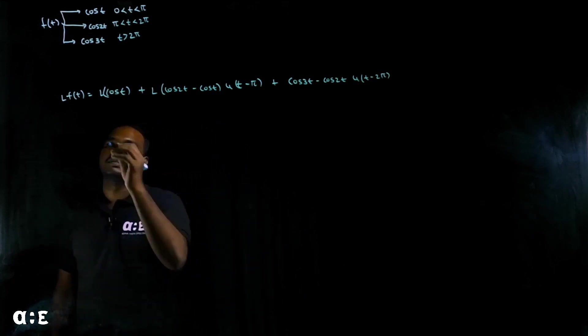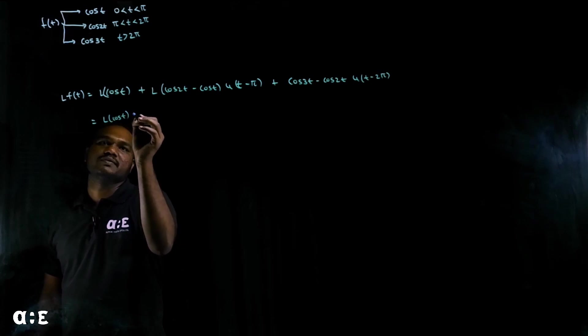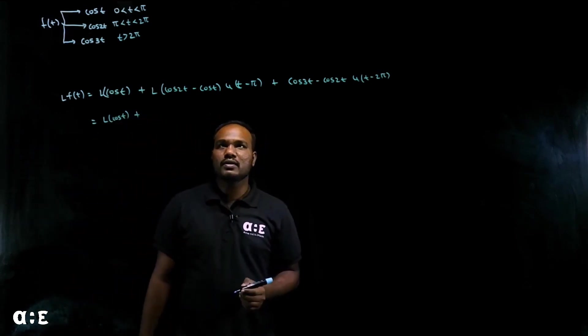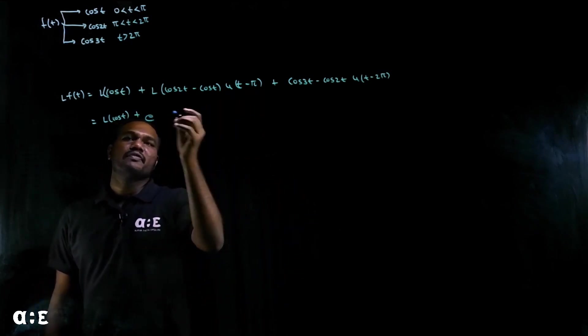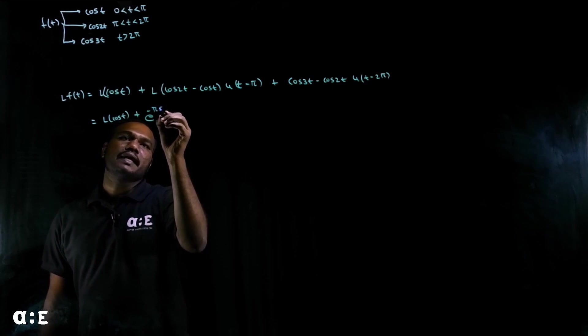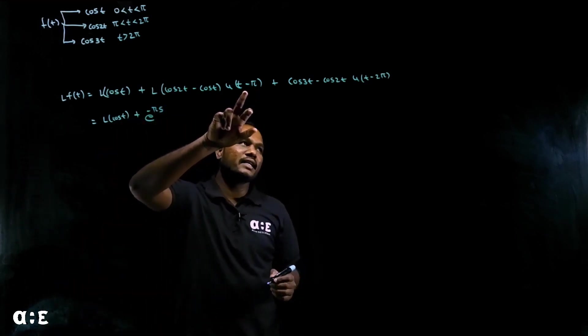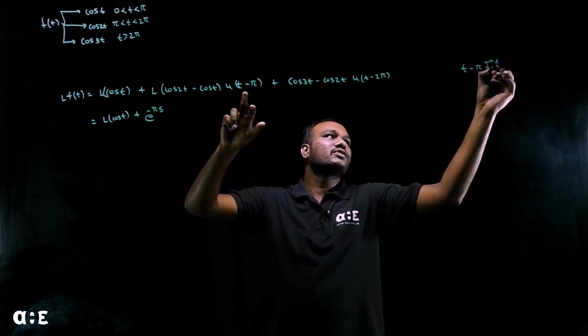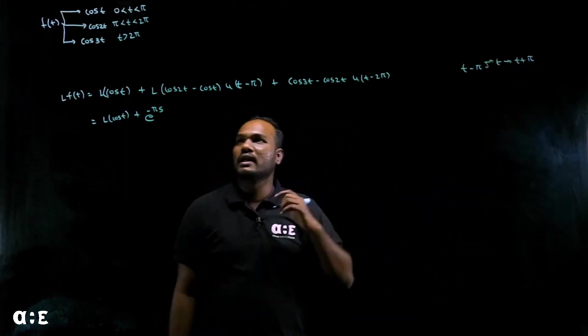Let's solve this. Keep Laplace of cos T as it is. Next we'll take Laplace of every term at a time. To solve this, first we need to eliminate U. So how do we do that? E power minus πs times this will eliminate U. To eliminate T minus π, we need to substitute T plus π in place of T.